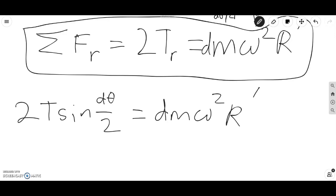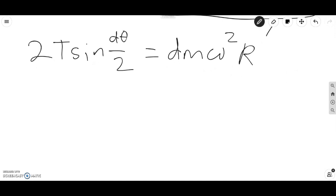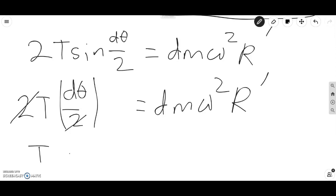Since we're considering a very small piece of the rubber band, we can employ the small sine angle approximation. So we can rewrite this. Since we know that sine of a very small angle is approximately equal to that very small angle, we can write that 2T d theta over 2 equals dm omega squared R prime. And just canceling this out yields T d theta equals dm omega squared R prime.